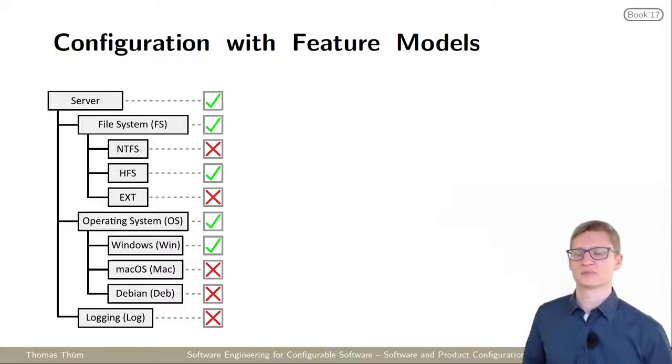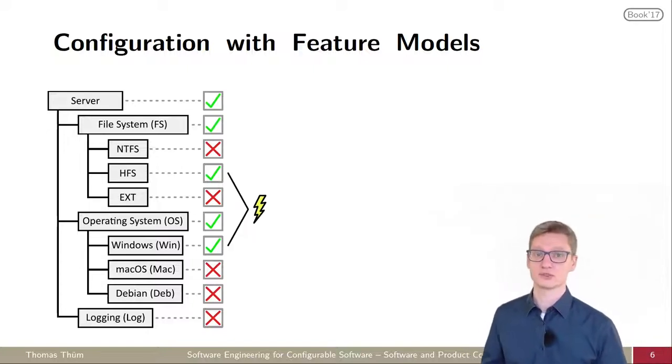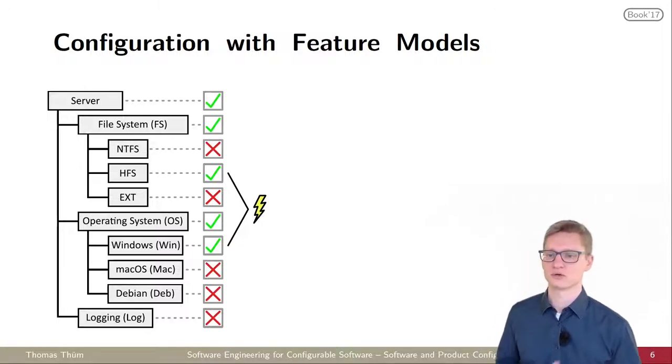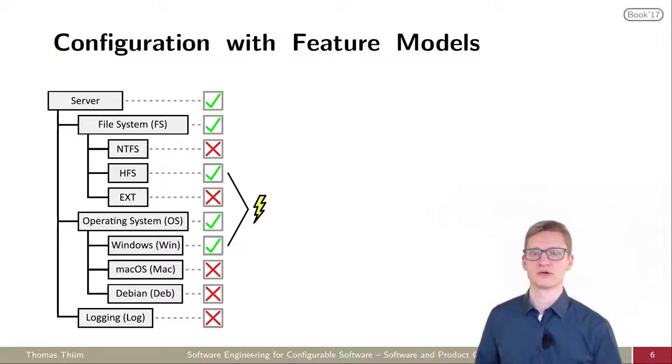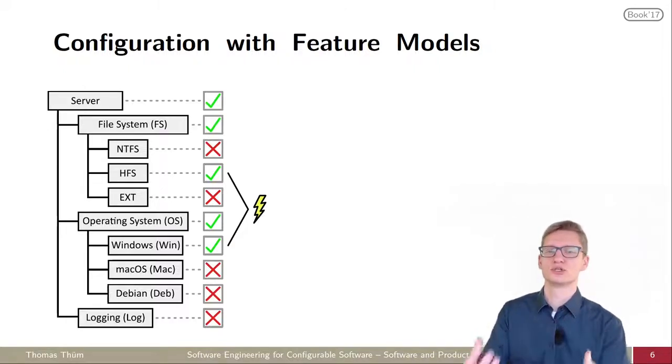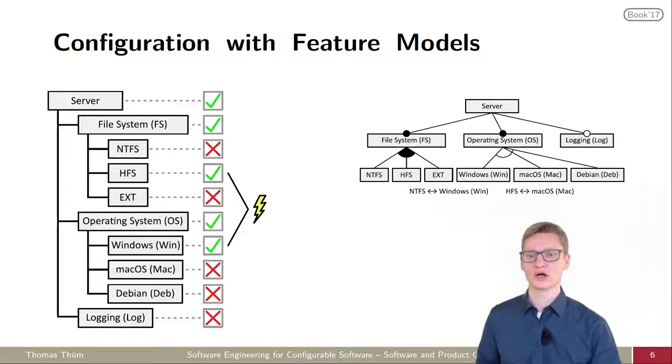But then comes the problem with dependencies, because it could be that some of the options you're choosing are actually not compatible with each other. In this example, you probably cannot choose to install Windows on HFS. The problem is you don't want to configure for hours this large system with 20,000 configuration options and then afterwards find out, okay, this is invalid. You rather want to have some support during the configuration already. You want to find out, if I do that selection, which other options are still available or not available anymore.